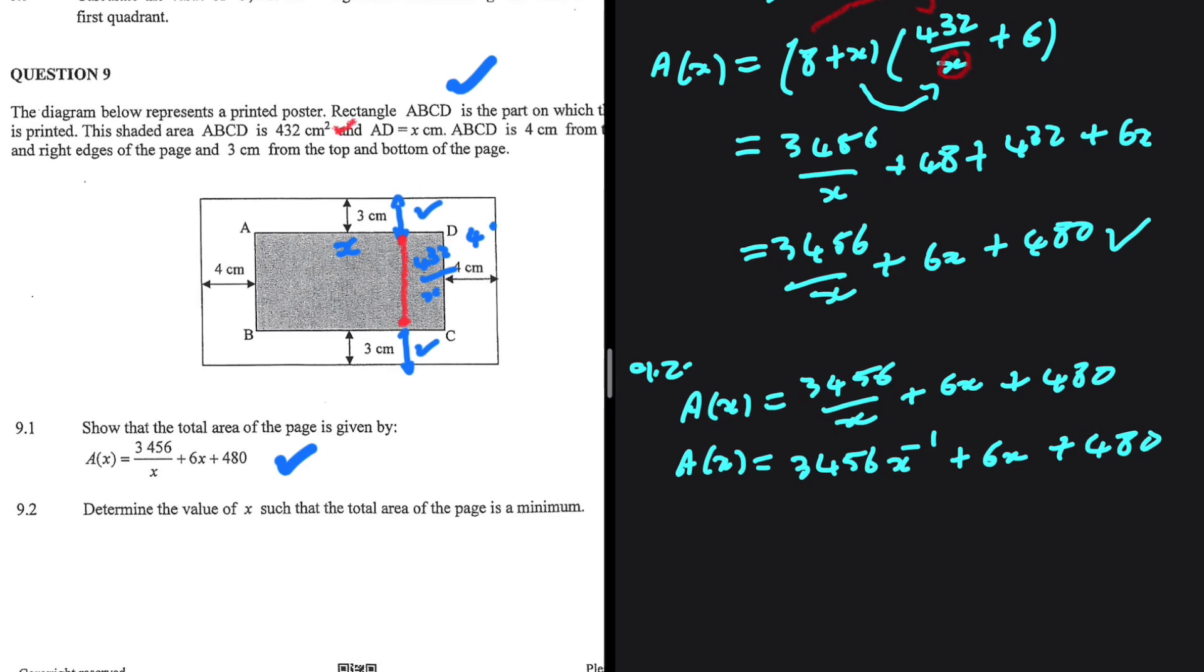Let's differentiate this using the power rule. A'(x) = -3456x^(-2) + 6.